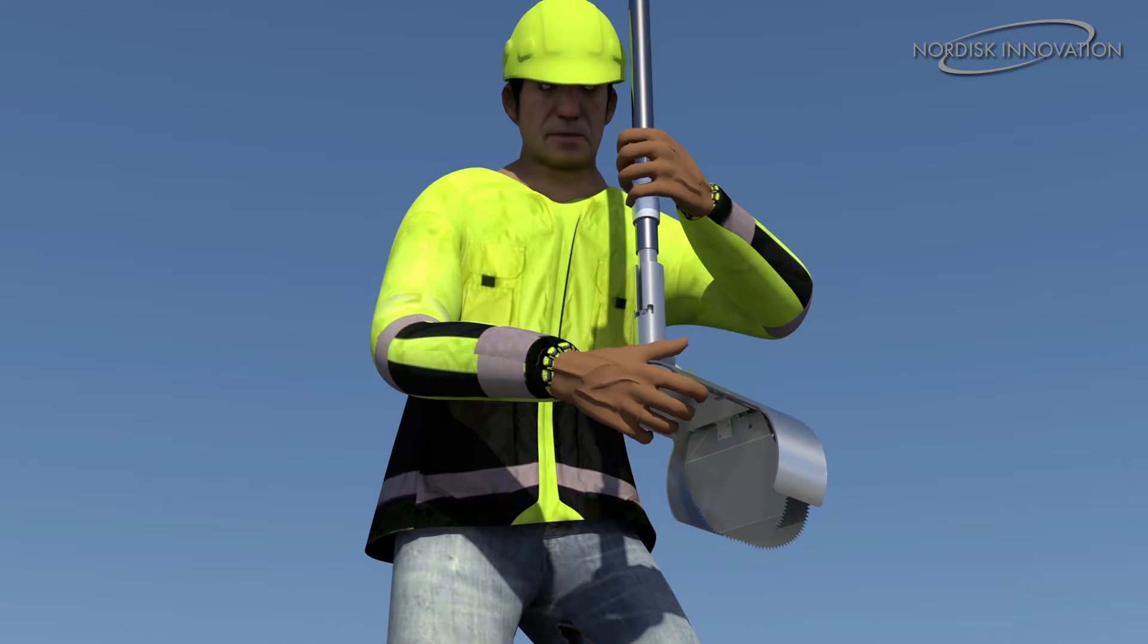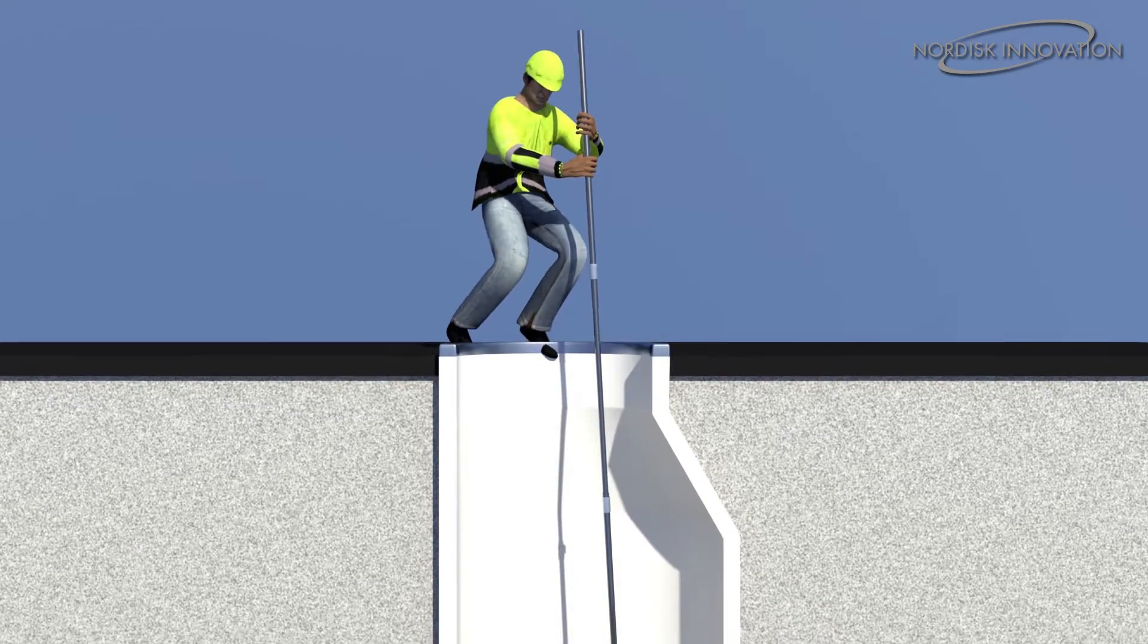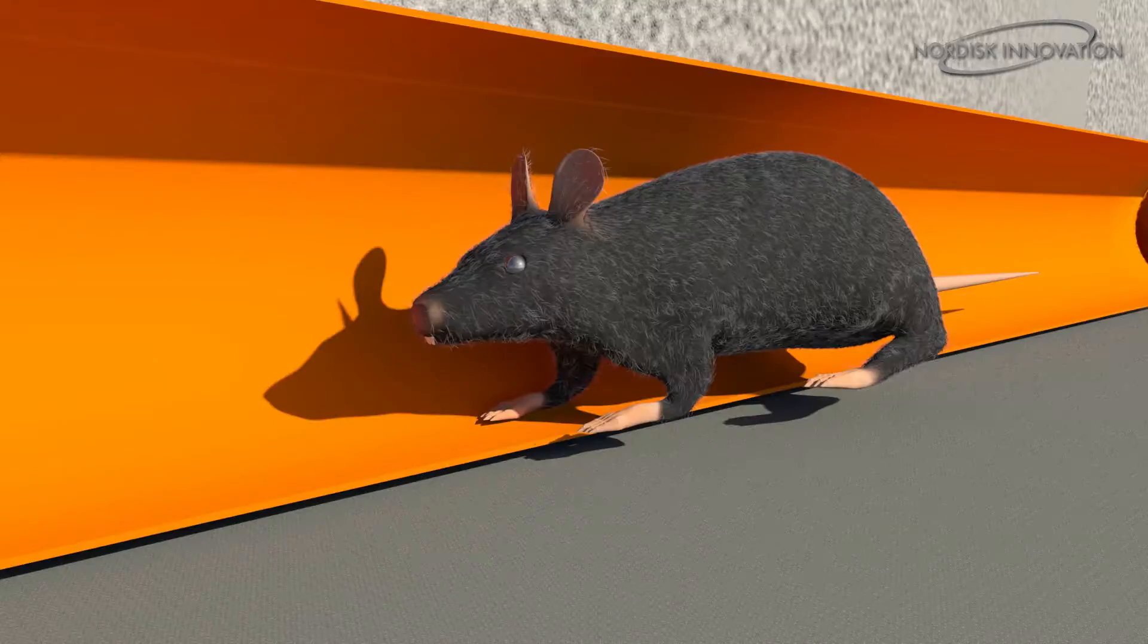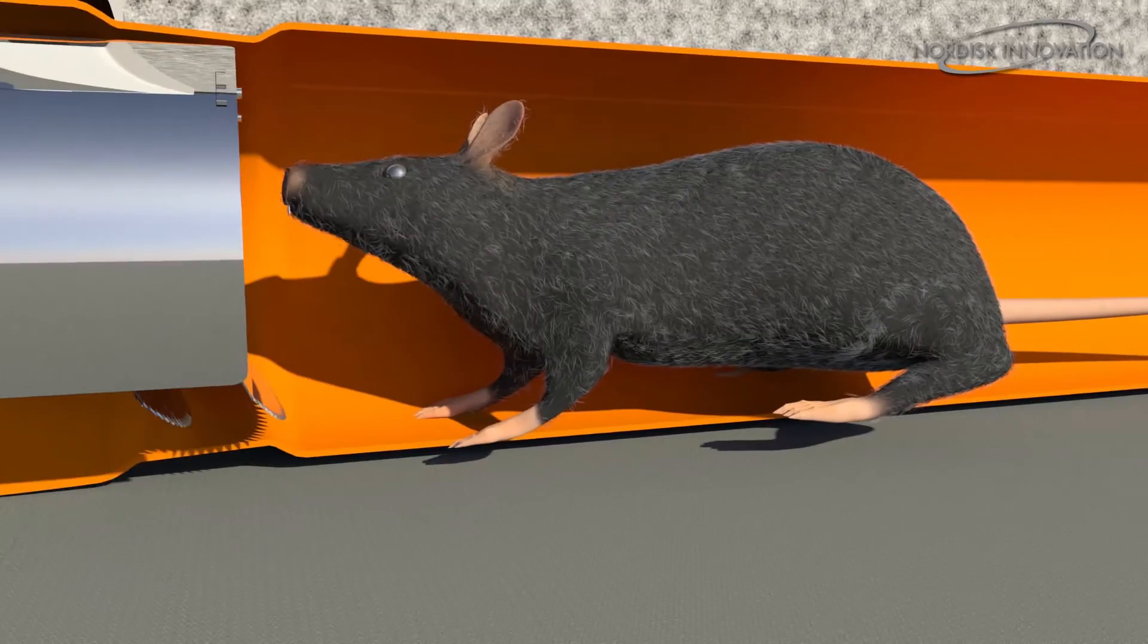Now you can stand on street level and install the rat blocker easily. And when service is needed, you can de-install the rat blocker, service, and reinstall it again at street level.